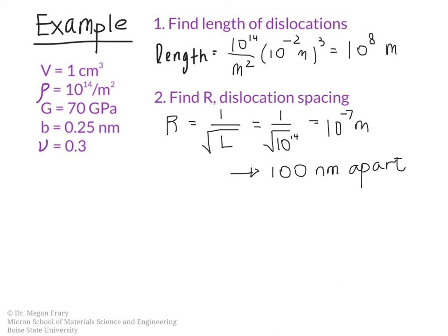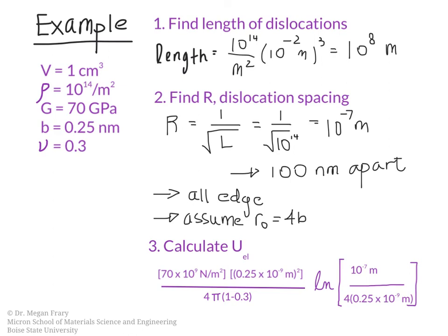We have to make a couple of assumptions here. The first one is that the dislocations are all edge, so we're going to assume that they are all edge, and we are also going to assume that the value of small r is 4 times the Burgers vector. This equation here will give us the elastic energy for one of the dislocations. So we have G, we have b squared, 4 pi 1 minus the Poisson's ratio, and then we have ln of big R divided by small r. We've left out the last term because of the fact that they're all edge dislocations and it goes to 1.